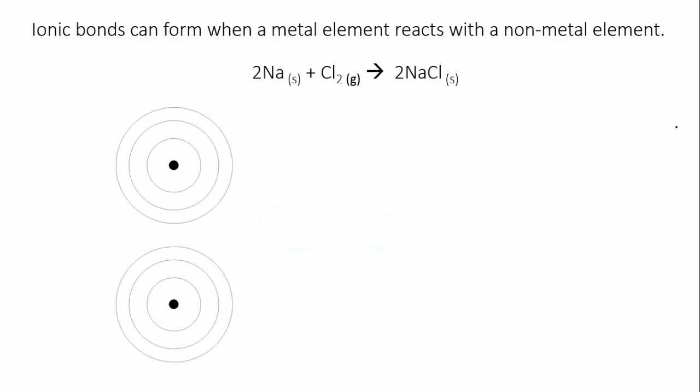When a metal is reacted with a non-metal, the new substance will be held together with ionic bonds. Let's look at the reaction between sodium and chlorine. It would be worth having a periodic table with you for this.